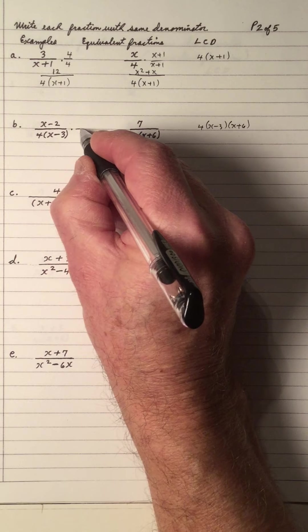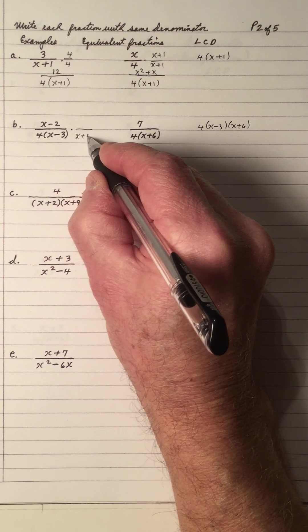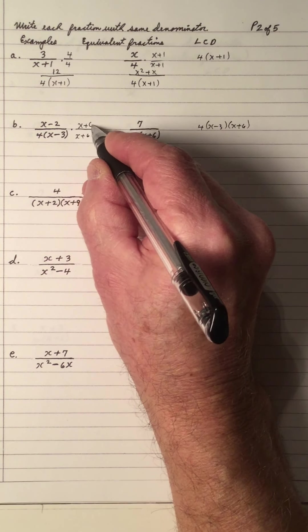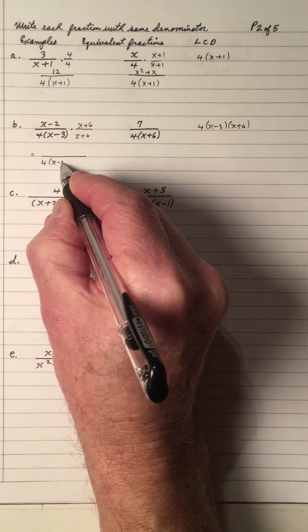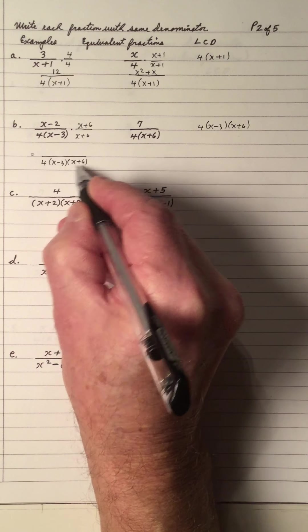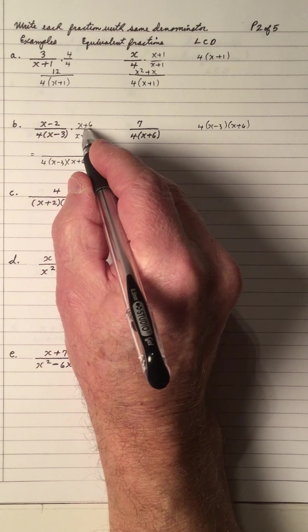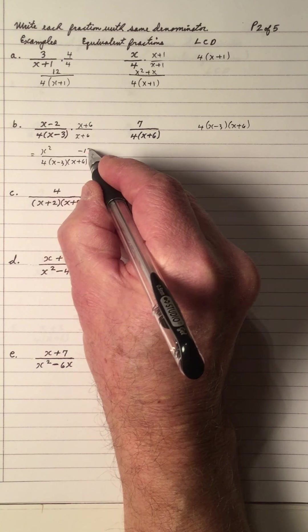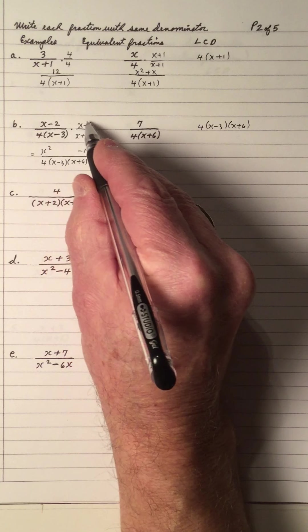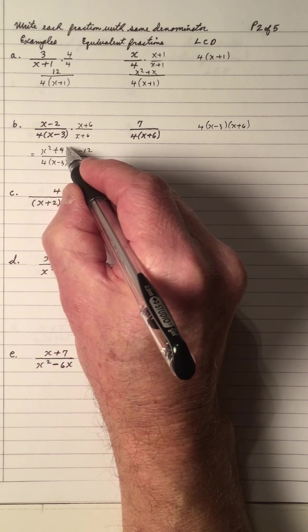What do you need to multiply 4 times x minus 3 to give you this? You need an x plus 6. Leave your denominator in factored form — don't multiply your denominator, just leave them in factored form like that. But multiply your numerators, and let's multiply fast: x times x is x squared; negative 2 times 6 is negative 12; outside is 6x; inside is negative 2x. Add: 4x.